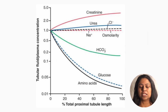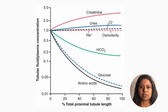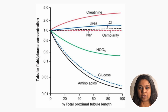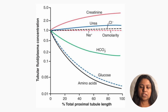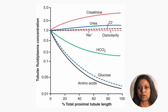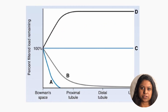This renal clearance graph is plotted with the tubular fluid concentration to plasma concentration of a substance on the y-axis and the percent proximal tubular length on the x-axis. The ratio of tubular fluid to plasma concentration will be greater than one for substances with net excretion, and less than one for substances with net reabsorption. Creatinine and urea are excreted, while electrolytes, glucose, and amino acids are reabsorbed. Sodium stays close to one, mirroring the urine osmolarity.